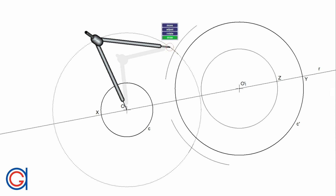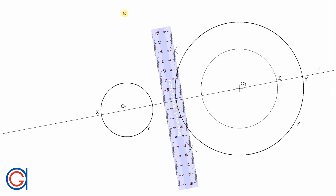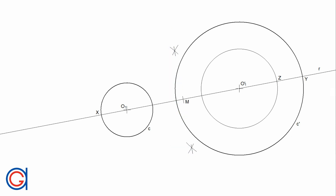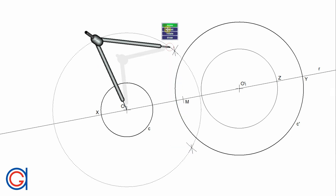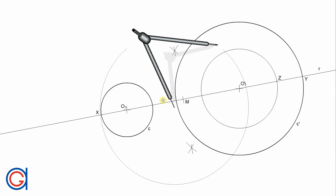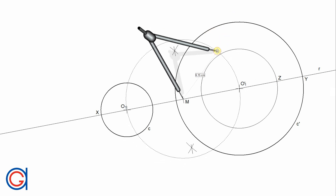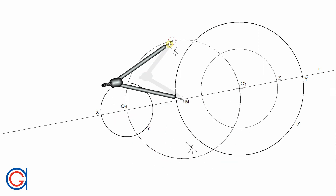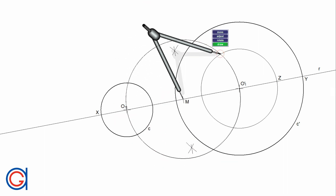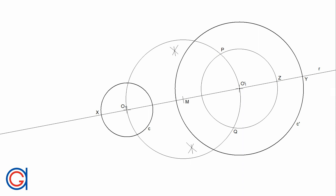And finally, with a ruler, we join these two intersections, obtaining a new midpoint M. Setting the compass on the midpoint M and with a radius M O1 or M O prime 1, we draw another auxiliary circle. These two auxiliary circles intersect each other at two points P and Q, as can be seen here.